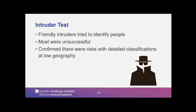In the intruder test, we allowed people to use the internet so they could use publicly available information. That fulfils the terms of the Statistics and Registration Service Act 2007 — we had to consider publicly available information rather than just privately obtained. This also fulfils the EU Data Protection Directive: an account should be taken of all the means likely reasonably to be used by either the controller or by any other person to identify the said person. So ordinary internet usage was fine for this test. We hope to get a paper on it published later next year.